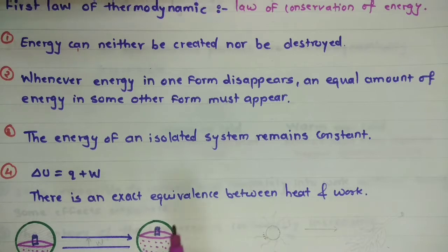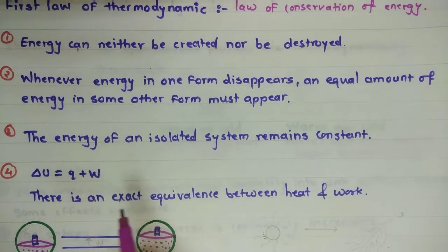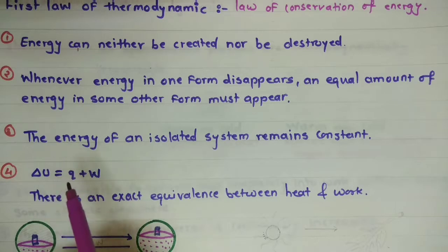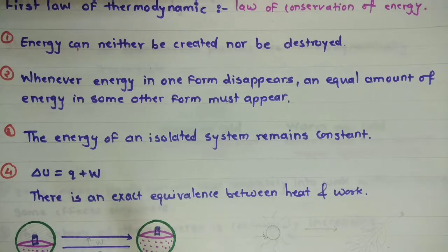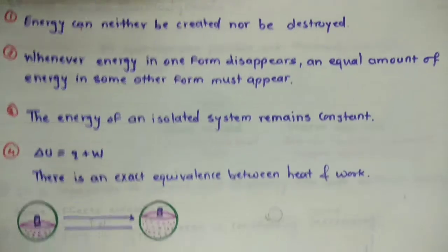The mathematical expression of the first law of thermodynamics is: ΔU = Q + W. Here, Q means heat, W means work, and ΔU means change in internal energy. There is an exact equivalence between heat and work, which we are going to simplify by looking at a diagram.